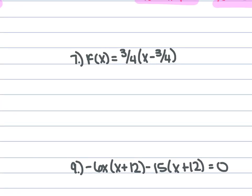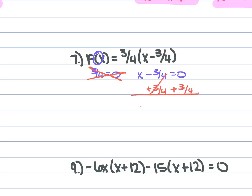For problem 7, we have f(x) = 3.4(x − 3.4), which is 0 = 3.4(x − 3.4). We set 3.4 = 0 — that's not true, so cross it out. For x − 3.4 = 0, add 3.4 to both sides and x = 3.4.